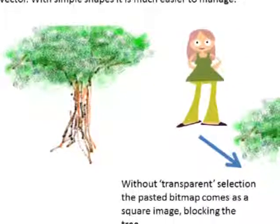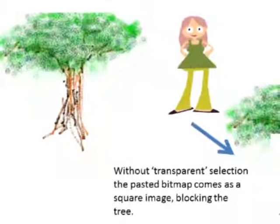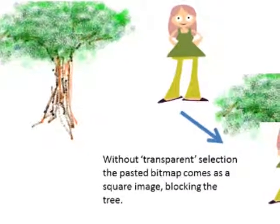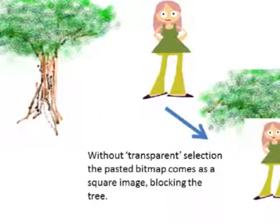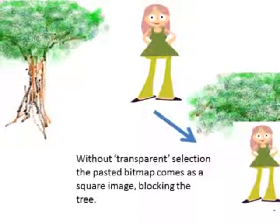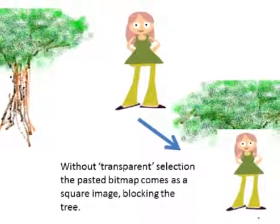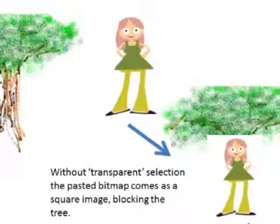See what happens if you use the paint tool to create the picture. Without transparent selection, the pasted bitmap comes as a square image blocking the tree.